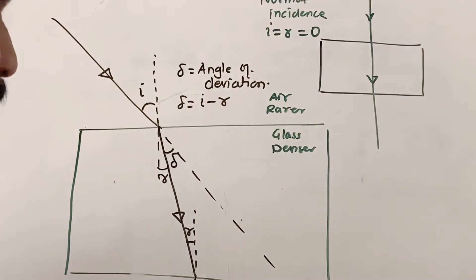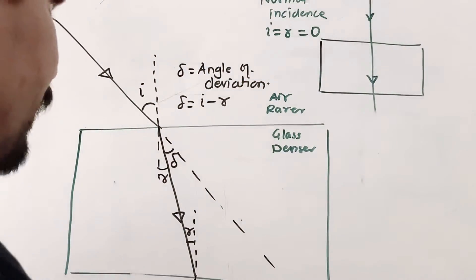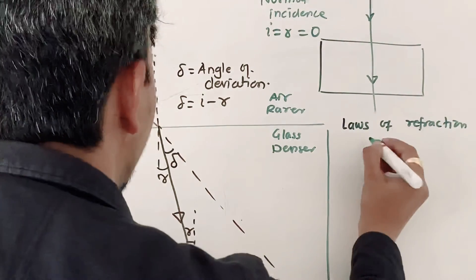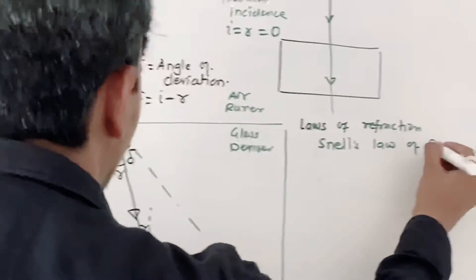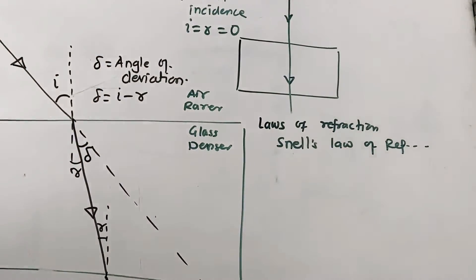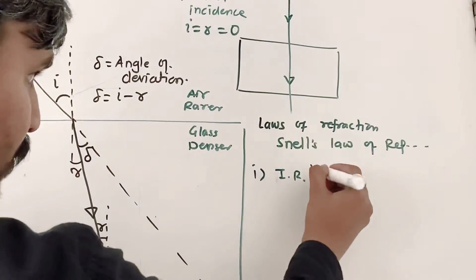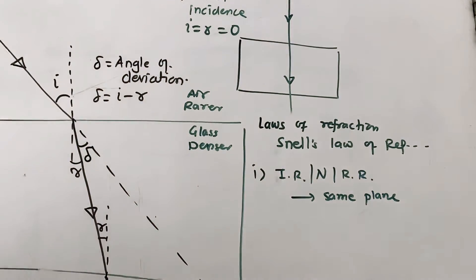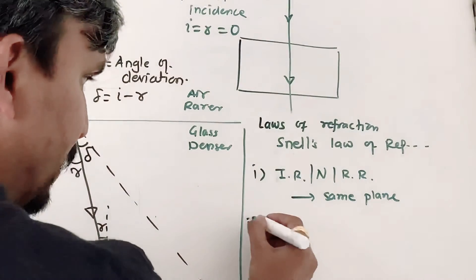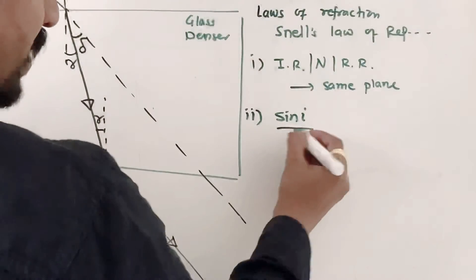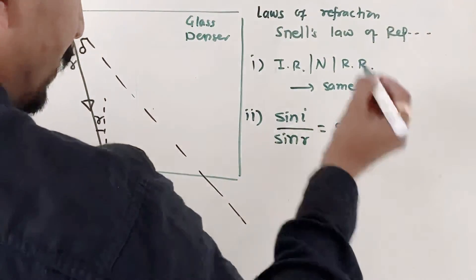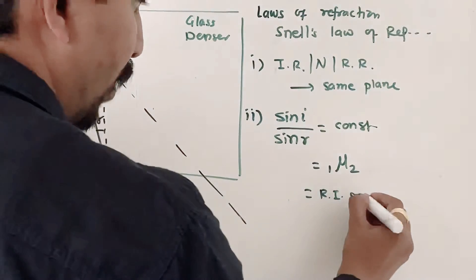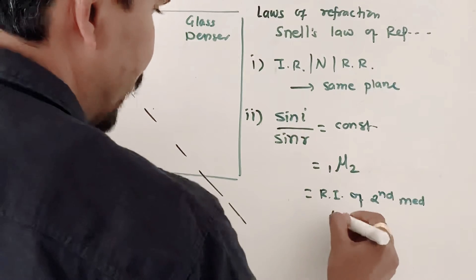Now I will write what are the laws of refraction, also known as Snell's laws of refraction. The first law says your incident ray, normal, and refracted ray all lie in the same plane at the point of incidence. The second law says the ratio of sine of angle of incidence to the sine of angle of refraction is a constant, and that constant is nothing but 1-mu-2, the refractive index of the second medium with respect to the first.